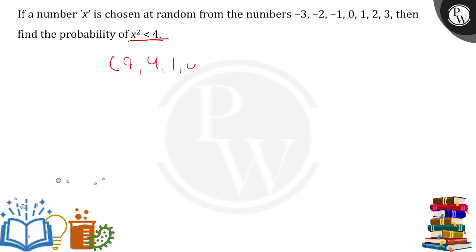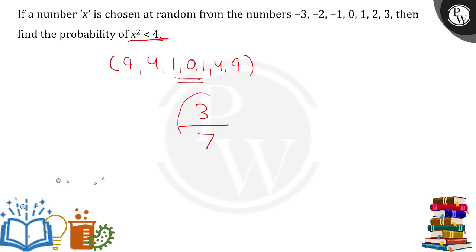The total number of outcomes is 7. We want x² less than 4 — not equal to 4, strictly less than 4. Only three cases satisfy this: x = -1, 0, 1 (giving squares 1, 0, 1). So the probability is 3/7.